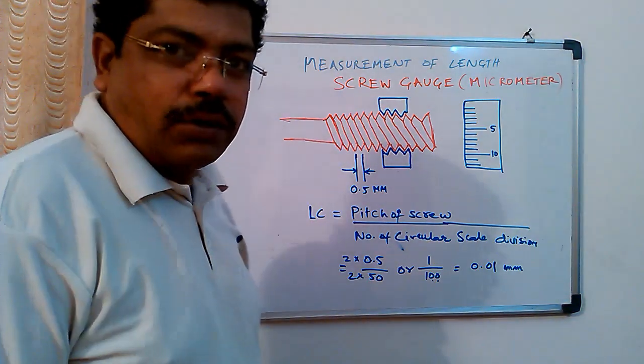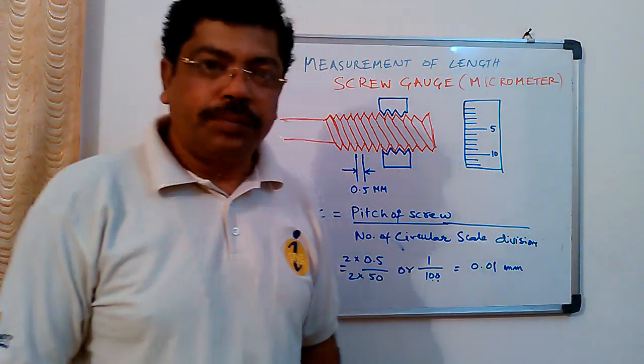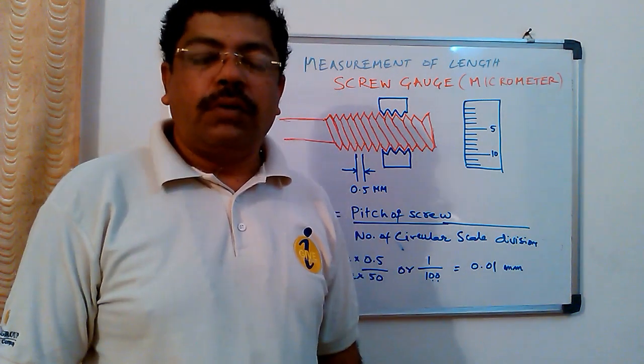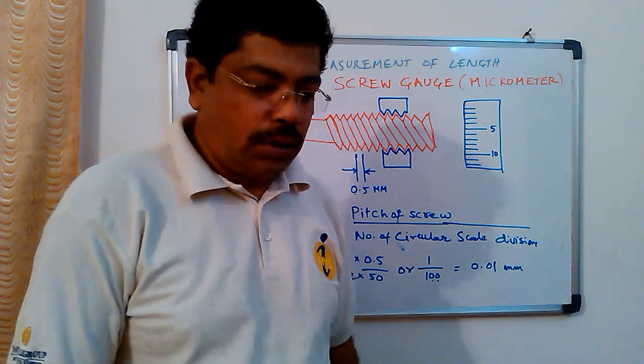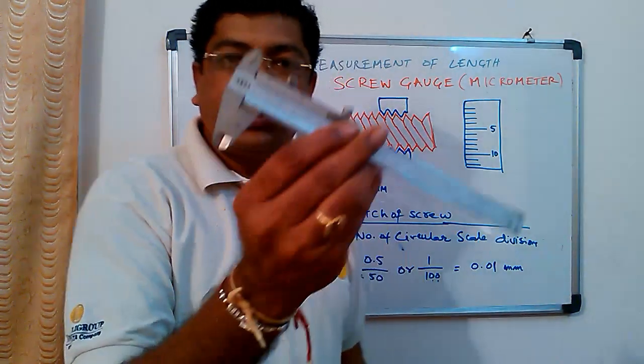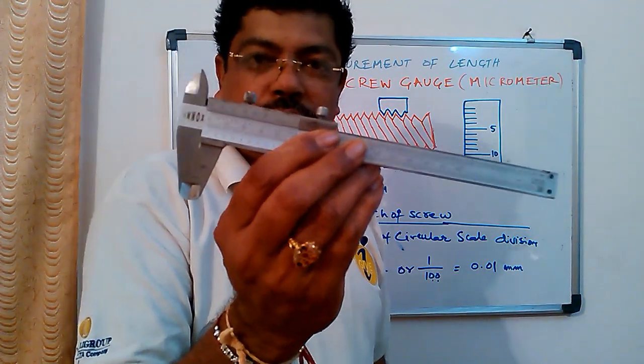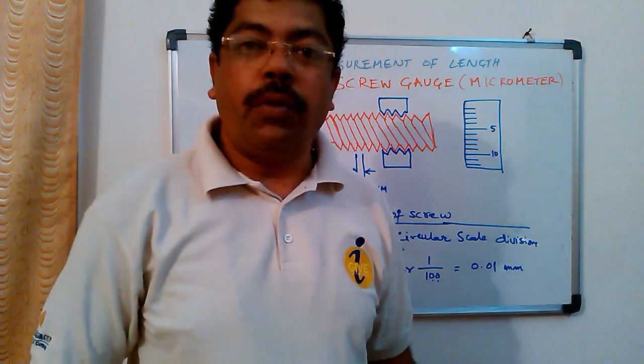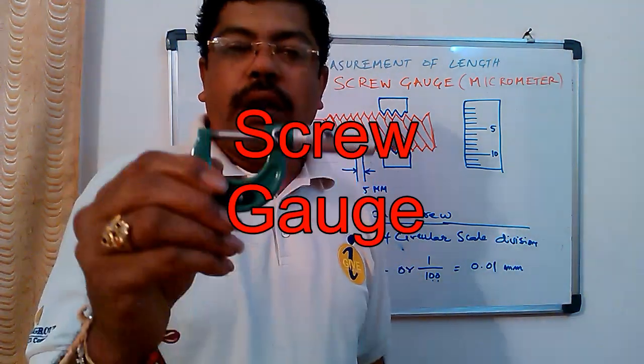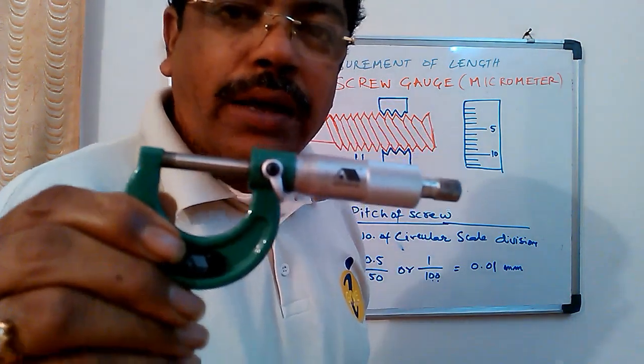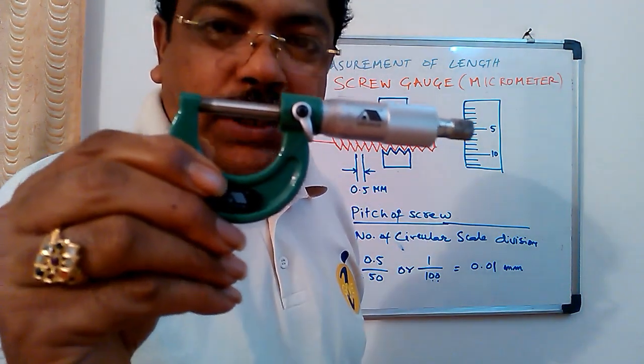Hello and welcome back to School of Experiments. In my previous lessons we have learnt about Vernier Calipers. Today I want to teach you about the screw gauge which is commercially known as micrometer.